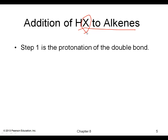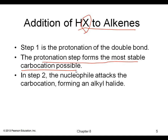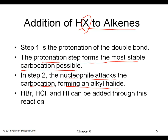The first reaction that's easiest to understand is adding HX to alkenes, where X stands for a halogen like chlorine — so HCl, HBr, and so forth. The first step is the protonation of the pi bond, and this protonation step occurs so that the carbocation that forms is as stable as possible. In the second step the nucleophile attacks the carbocation, and we get a product that is an alkyl halide.